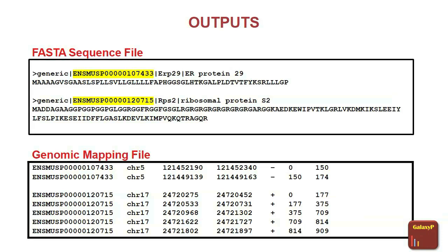One thing you will observe here is that this is a 174 base pair sequence, and you can see there is a gap between regions which shows that an intron is present. This kind of helps you to map regions of the protein. Later it also helps you because if you identify a peptide from this protein, one can use these coordinates to go back and find out the coordinates of the peptide as well.